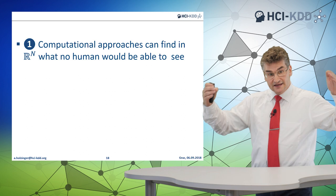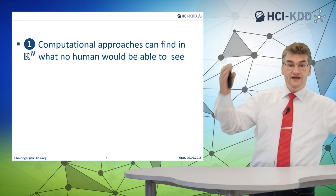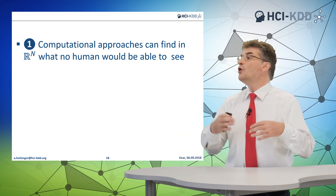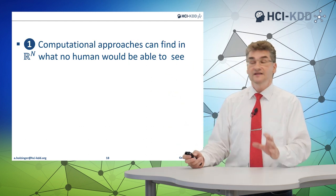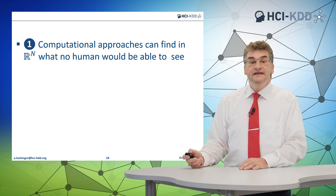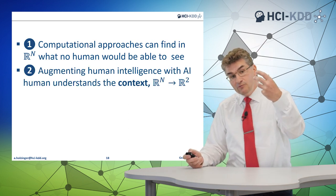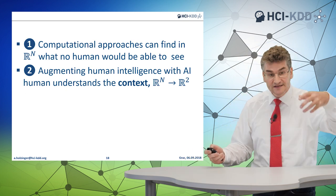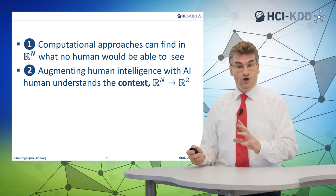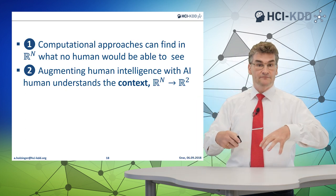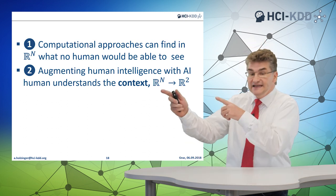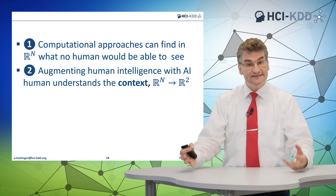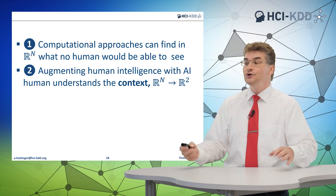Summarizing and coming to the conclusion: computational approaches can find in arbitrarily high-dimensional spaces what no human would be able to see — that's good. But sometimes we need the human, and we want to augment human intelligence with artificial intelligence, because the human understands context, which no algorithm on this planet can do to date. This requires an effective mapping from R^n to R^2 to make results understandable and accessible to a human end-user.